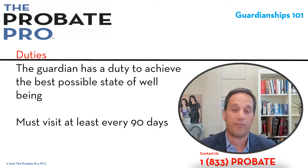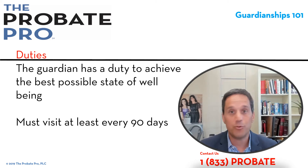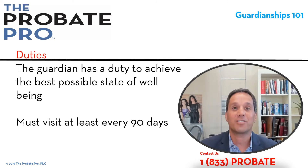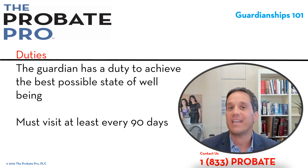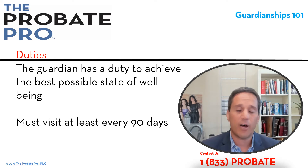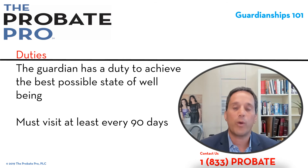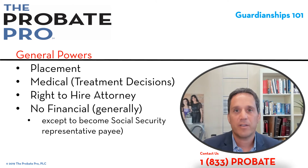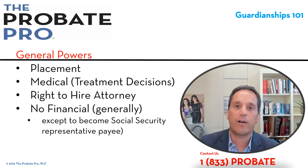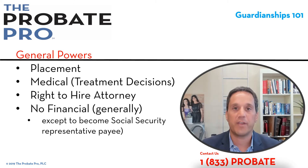The basic duties of a guardian are straightforward: achieve the best possible well-being for the individual. How you do that is really the magic — some guardians are great and some not so great. One requirement in Michigan is that there must be a personal visit at least once every 90 days. For someone living with the guardian that's simple, but a professional agency is at minimum required to visit at least once every 90 days.